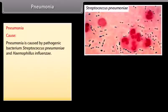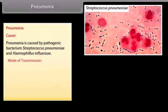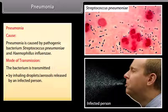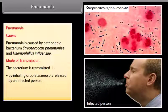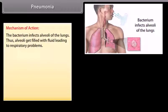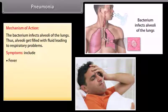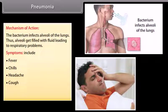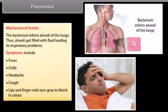Pneumonia is caused by the pathogenic bacteria Streptococcus pneumoniae and Haemophilus influenzae. The bacteria are transmitted by inhaling droplets or aerosols released by an infected person, or by sharing utensils with an infected person. The bacteria infect the alveoli of the lungs, which get filled with fluid, leading to respiratory problems. Symptoms include fever, chills, headache, cough, and lips and fingernails turning grey to bluish in colour.